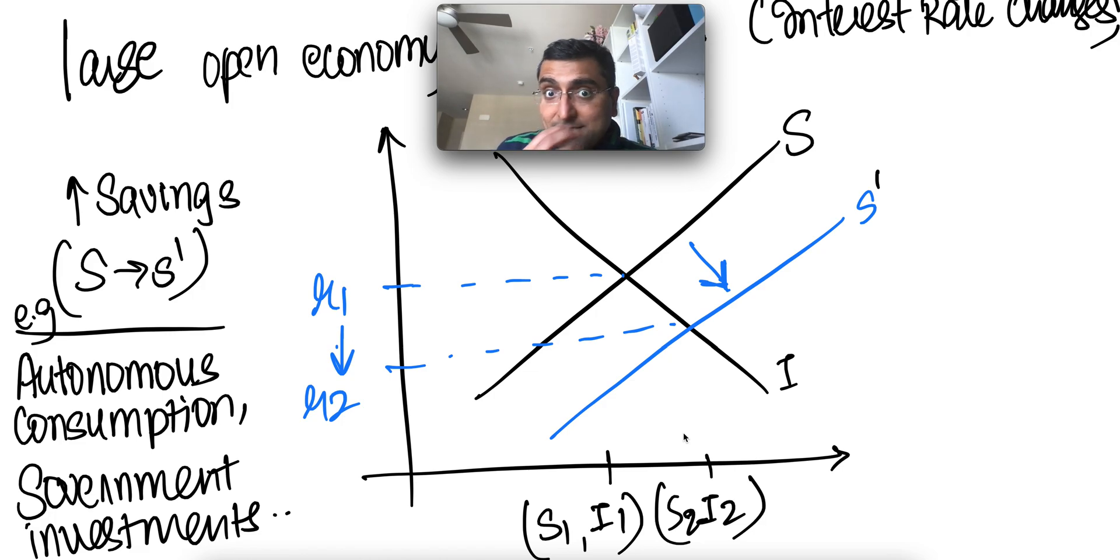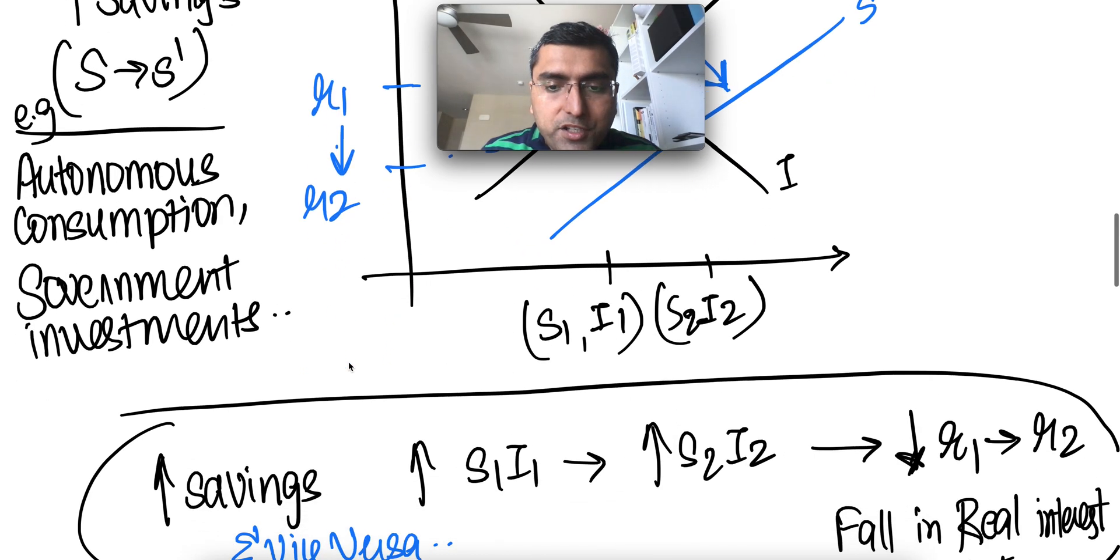So as autonomous consumption drops because people want to save more, and government investment increases, we see that interest rate falls. So when savings goes up, interest rate falls in a large economy.